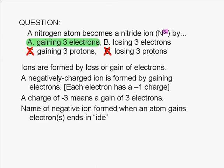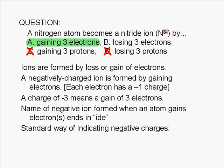Note: the name of a negative ion formed when an atom gains electrons ends in "-ide." Also, the standard way of indicating negative charges is to write a minus sign if the charge is negative one, two minus if the charge is negative two, three minus if the charge is negative three, and so on.